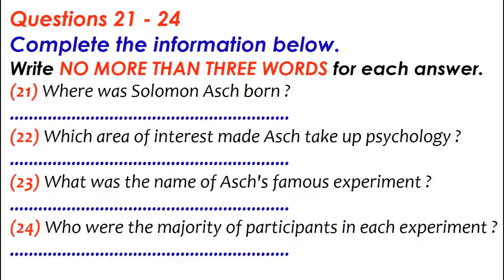He went to an ordinary high school, and as he had an interest in human behavior, he decided to study psychology. He was quite disappointed with his first acquaintance with psychology — it seemed to be all about rats and mice, and that didn't interest him at all. However, he persevered and eventually became a professor of psychology. The experiment which made his name is called the line judgment task. Participants were asked to compare some simple lines — given a card with three lines, then asked to compare another single line and say whether it was longer or shorter. What a participant didn't know was that all the other participants were effectively actors, instructed to give a wrong judgment, and the purpose of the experiment was to see how the single subject would react.